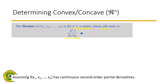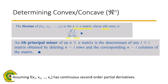The ith principal minor of an n by n matrix is the determinant of any i by i matrix obtained by deleting n minus i rows and the corresponding n minus i columns. For the first principal minor, we delete n minus 1 rows and columns and solve for the determinant. For the second principal minor, we delete n minus 2 rows and the corresponding columns, leaving an i by i matrix, then solve the determinant.